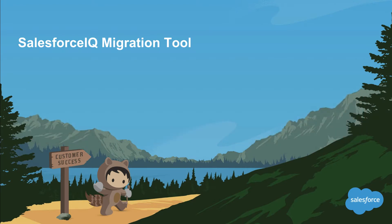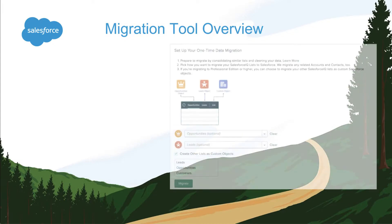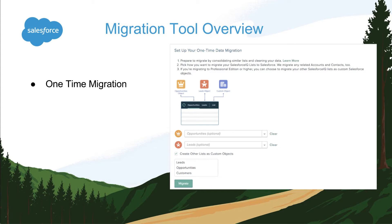Okay, let's go ahead and get started with a high-level overview of what this tool does. This is a one-time migration. This tool takes a snapshot of your data in SalesforceIQ and migrates it over to Sales Cloud. Any changes you make in SalesforceIQ after the migration will not be reflected in Sales Cloud. This tool is designed to migrate two of your lists to standard Salesforce objects by mapping them to the leads and the opportunity object. All other lists will migrate over to Sales Cloud as custom objects.